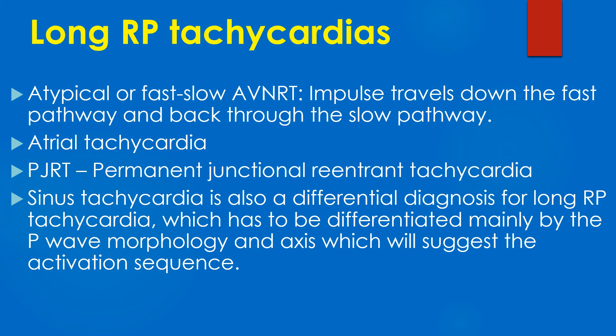Other forms of long RP tachycardia are atrial tachycardia and PJRT, or permanent junctional reentrant tachycardia. Sinus tachycardia is also a differential diagnosis for long RP tachycardia, which must be differentiated mainly by the P wave morphology and axis, which will suggest the activation sequence from the sinus node downwards into both atria.